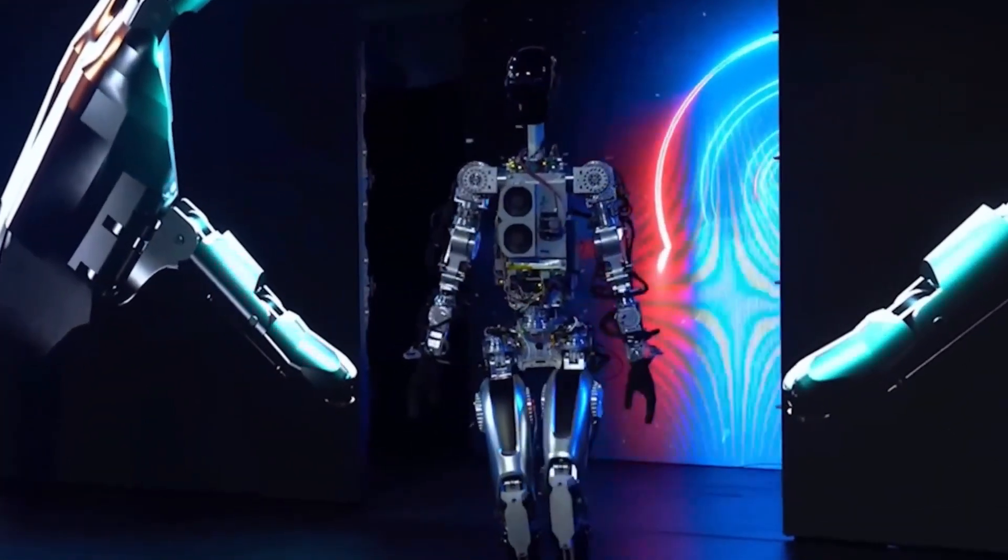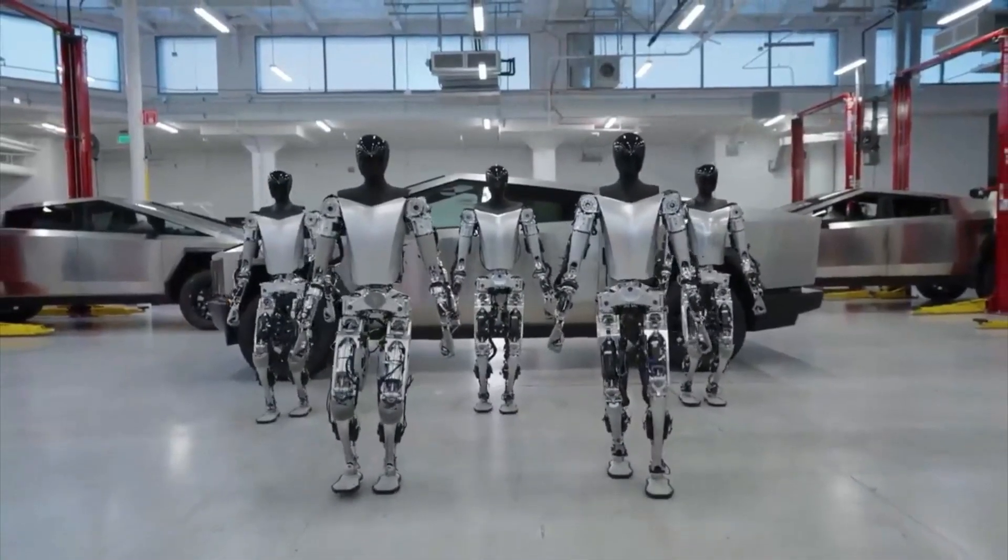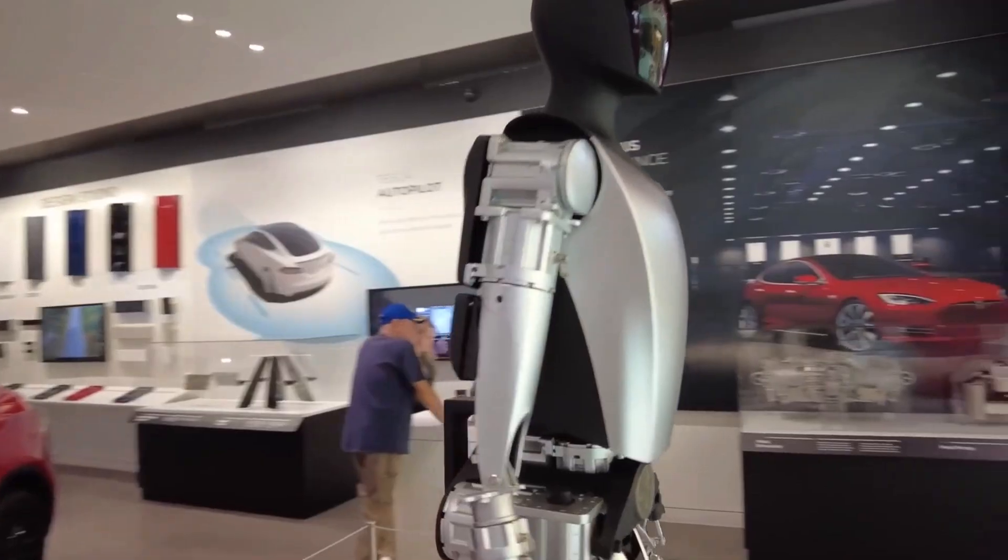Weight: Optimus weighs 161 pounds, which is relatively light for a humanoid robot of its size. It uses metal where necessary, but as much plastic as possible for weight savings.